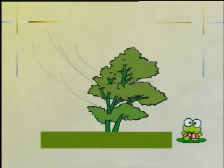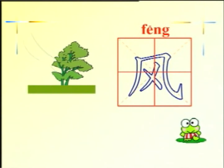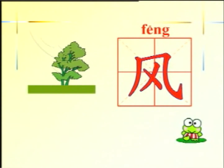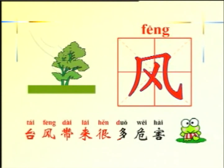小朋友，在这一幅图片里你看见了什么？风。飞封。风的笔画是：撇、横斜勾、撇、那。风是独体字。小朋友，你能用风组词吗？刮风、台风、风景、风格。你能用风造句吗？台风带来很多的危害。